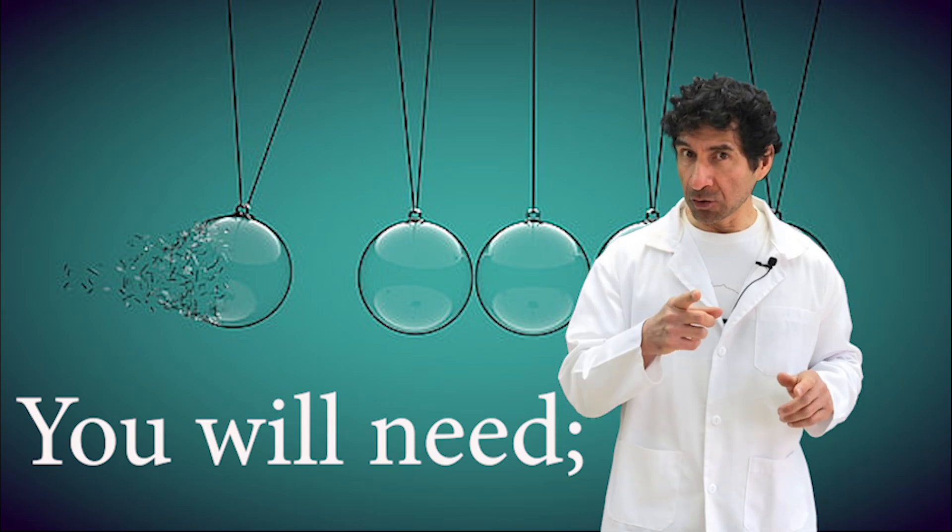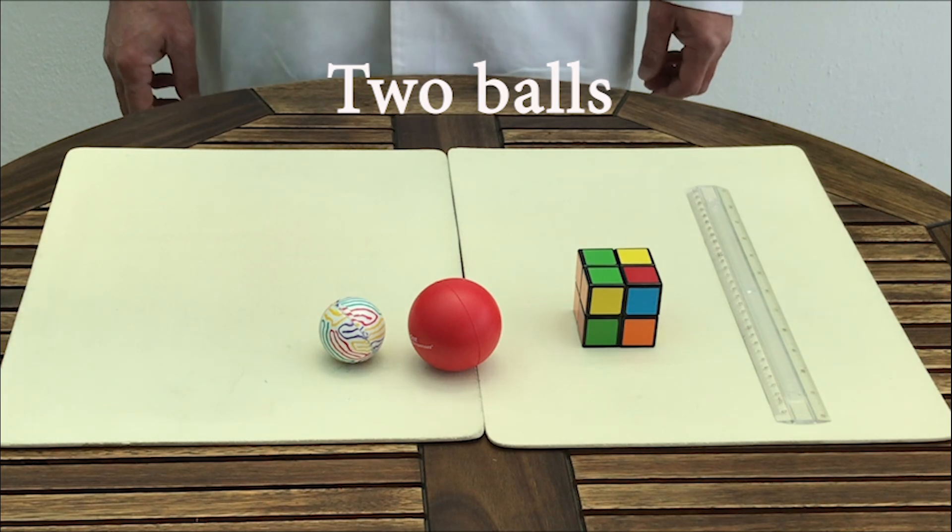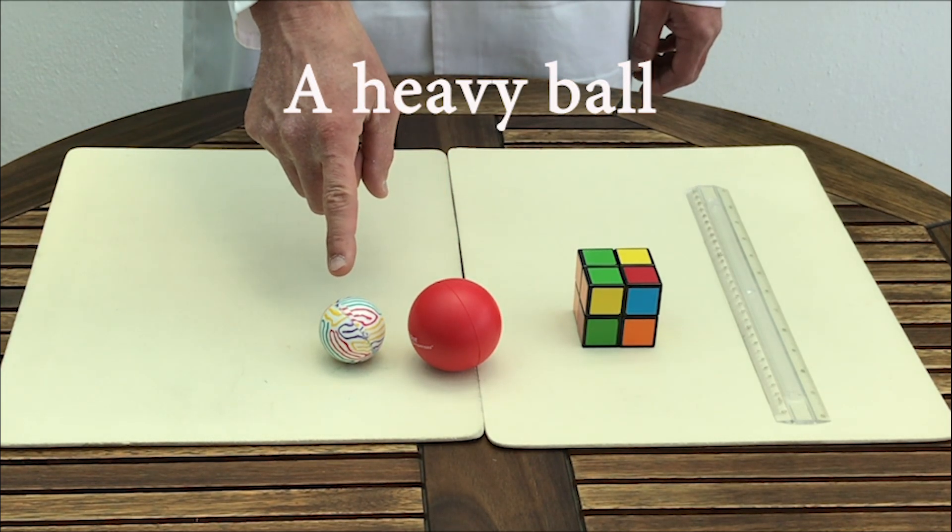For this experiment, you will need a ruler, an object, two balls—one should be light and one should be heavy—and a ramp.